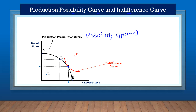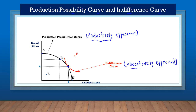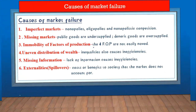However, only point C — where the indifference curve touches the PPC — is allocatively efficient. All the points on the PPC are productively efficient, but only the point where the indifference curve touches the PPC will be allocatively efficient. Point E is inefficient, and point F is not attainable — it cannot be achieved.